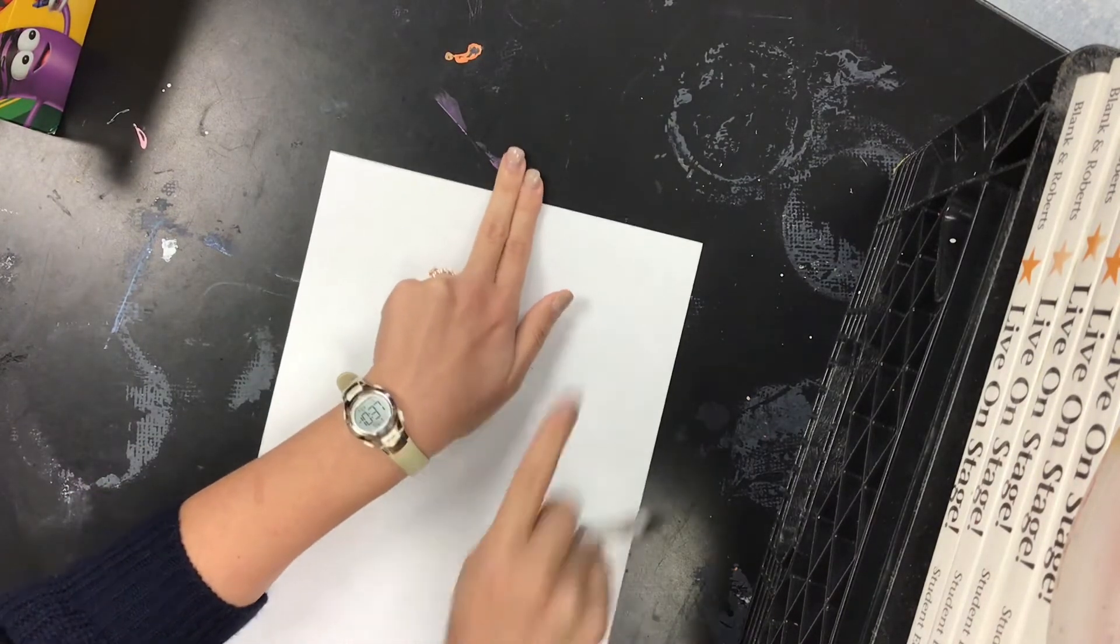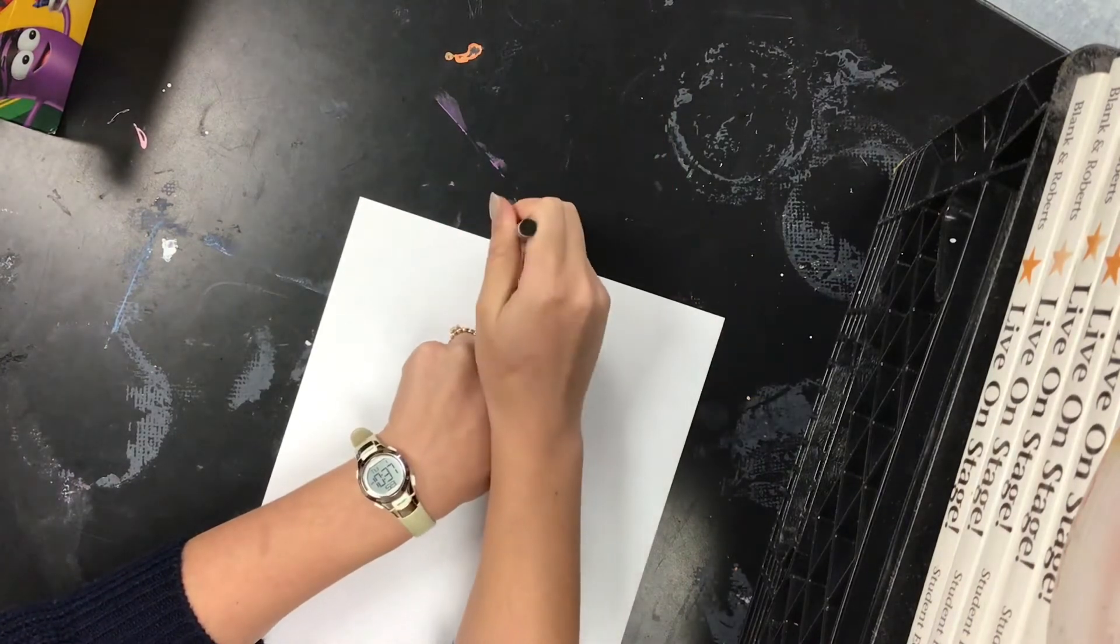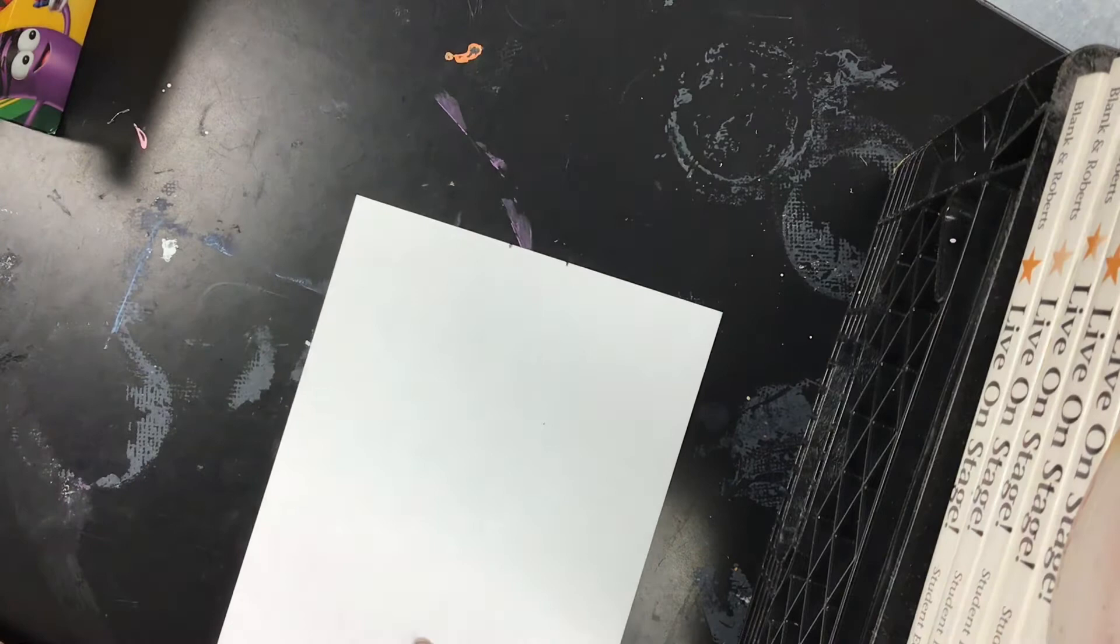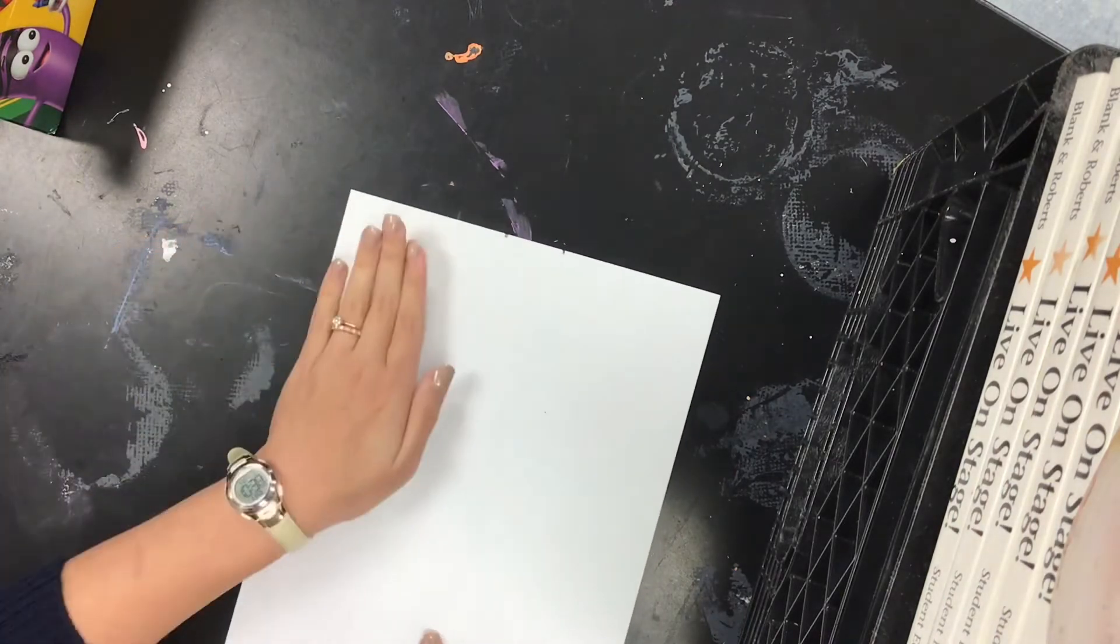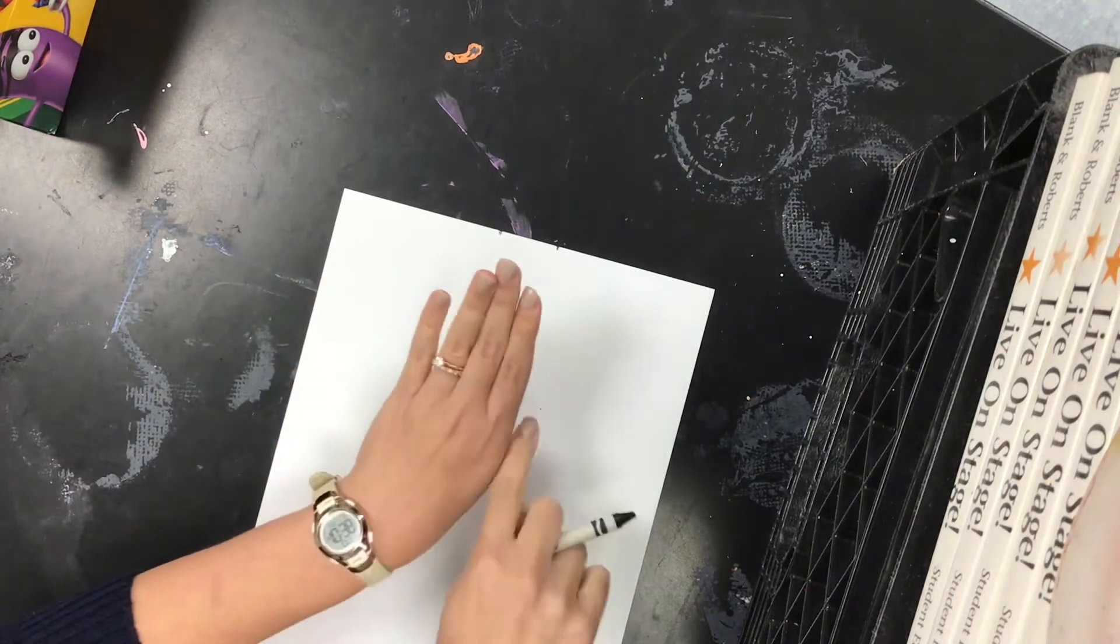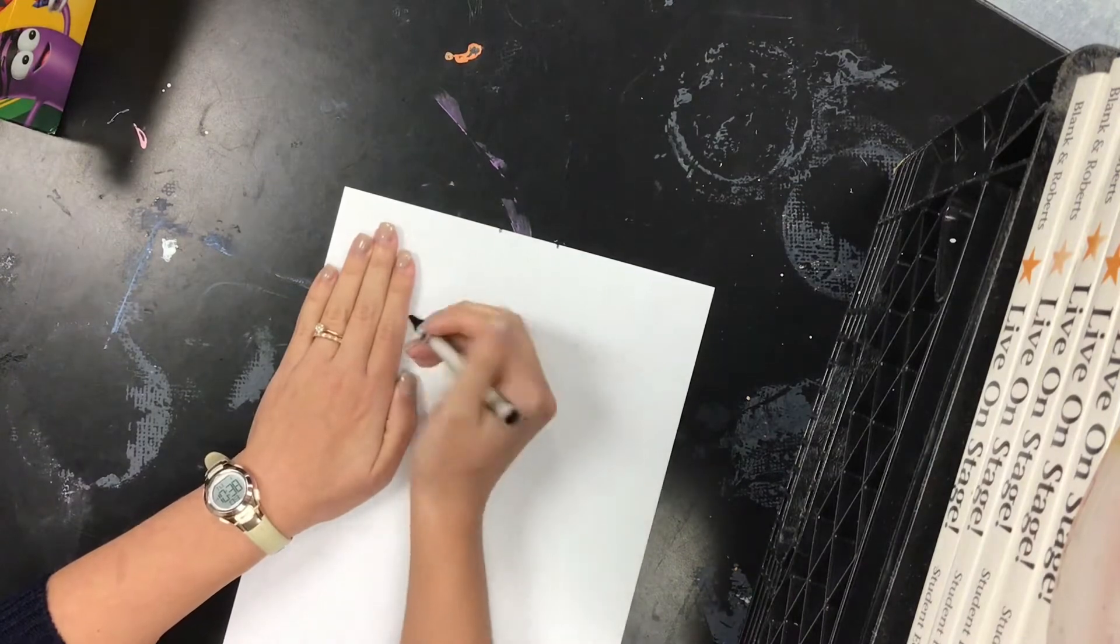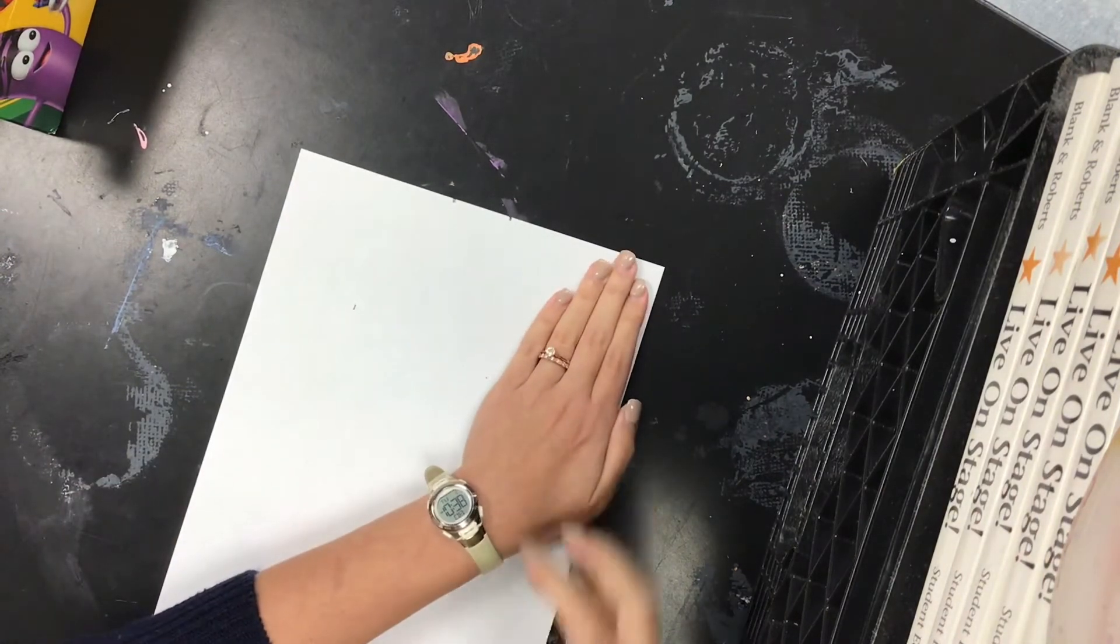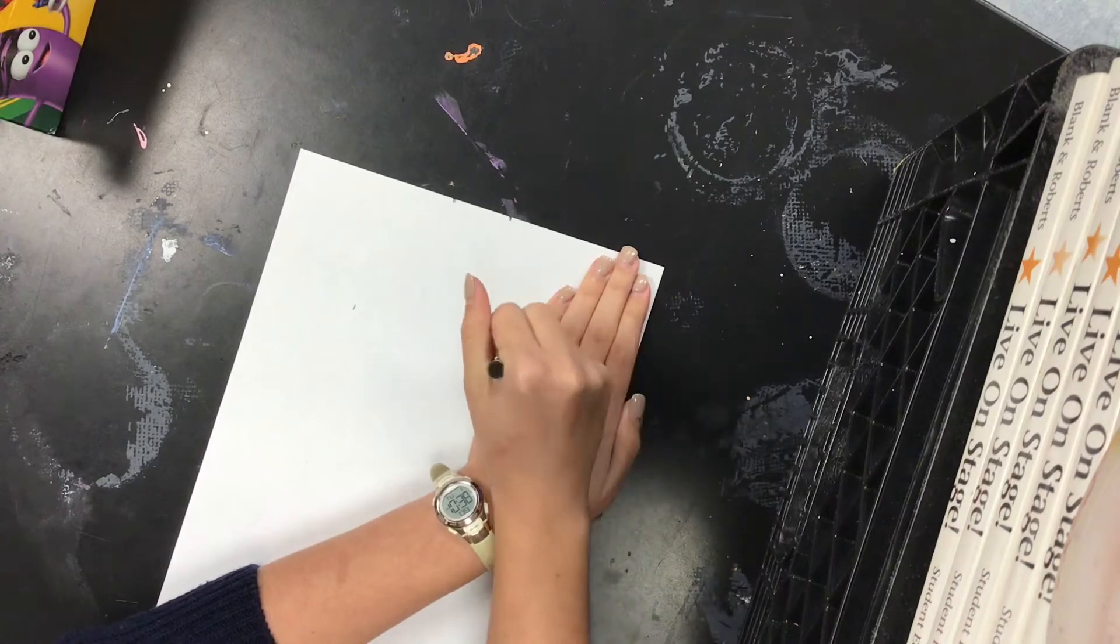I'm going to put two fingers at the top of my paper to help me measure and make a little dot on each side. Then I'm going to lay my hand towards the top, four fingers, line it up, and I'm making another dot on each side.